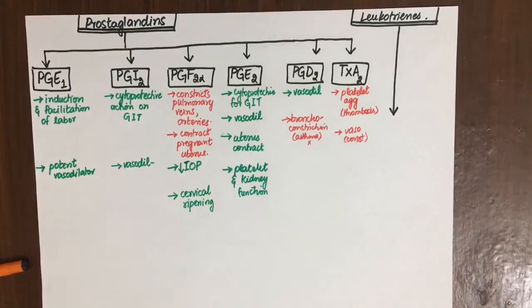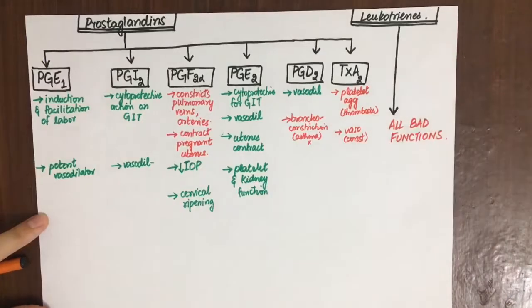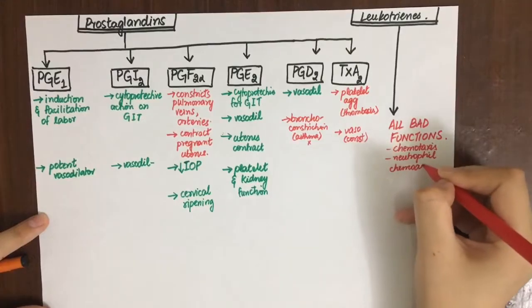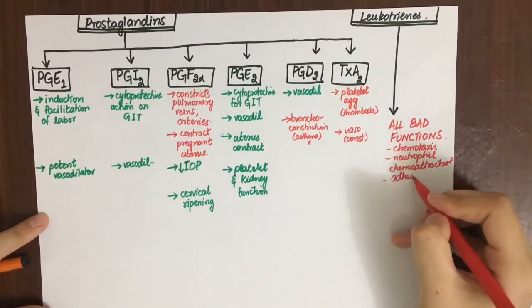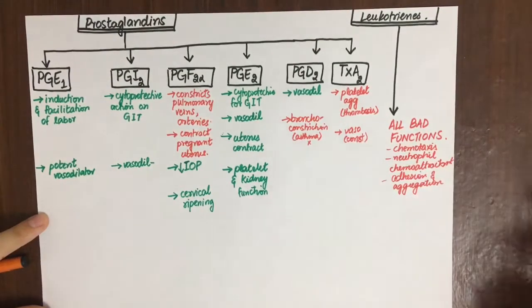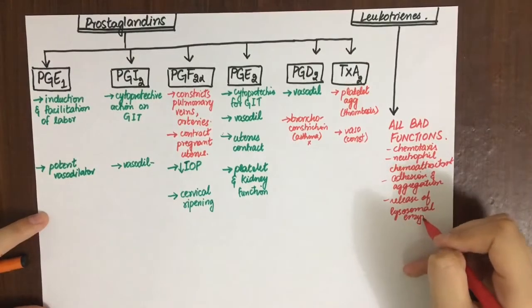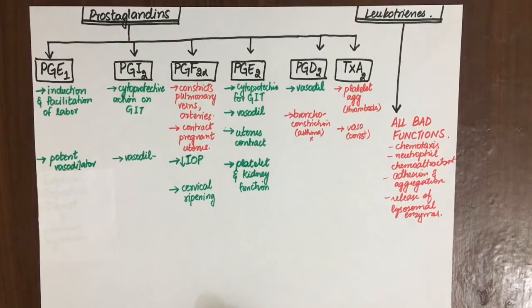As mentioned previously, leukotrienes are all bad functions - not bad in the sense, but bad because we cannot use them pharmacologically. They are all important functions in inflammation: chemotaxis, neutrophil activation, adhesion and aggregation of neutrophils, and release of lysosomal enzymes. Now let's see how we can use these prostaglandins as drugs for our advantage.